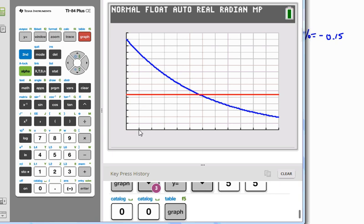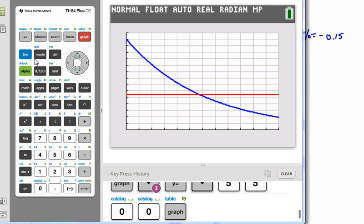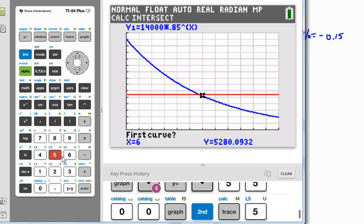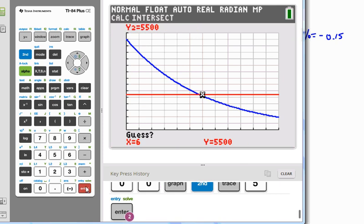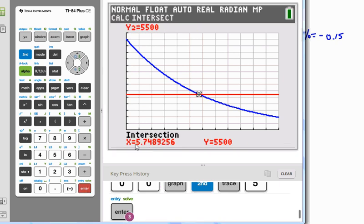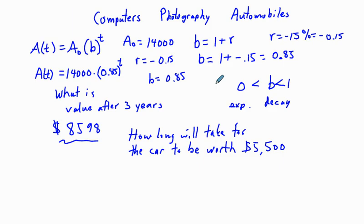And roughly we can see after about six years. To find the exact value, we press second, trace, five, enter, enter, enter. So five point seven, five and three quarter years. So in about five and three quarter years.